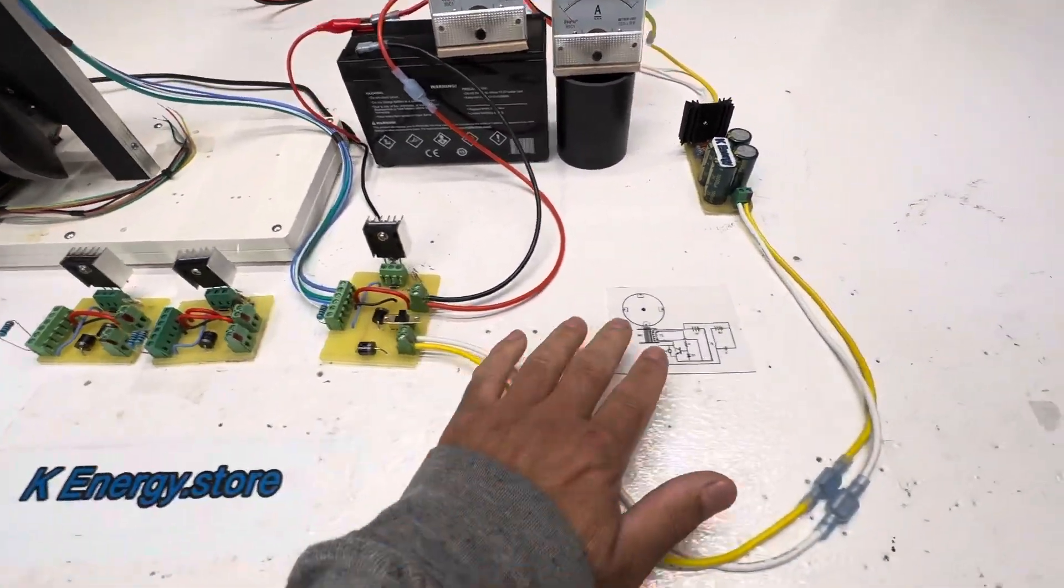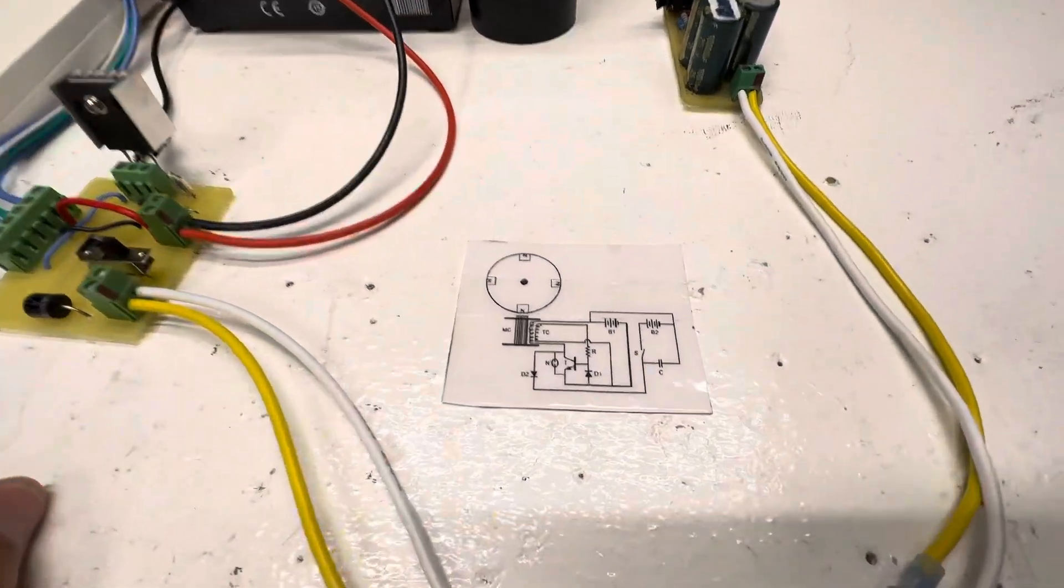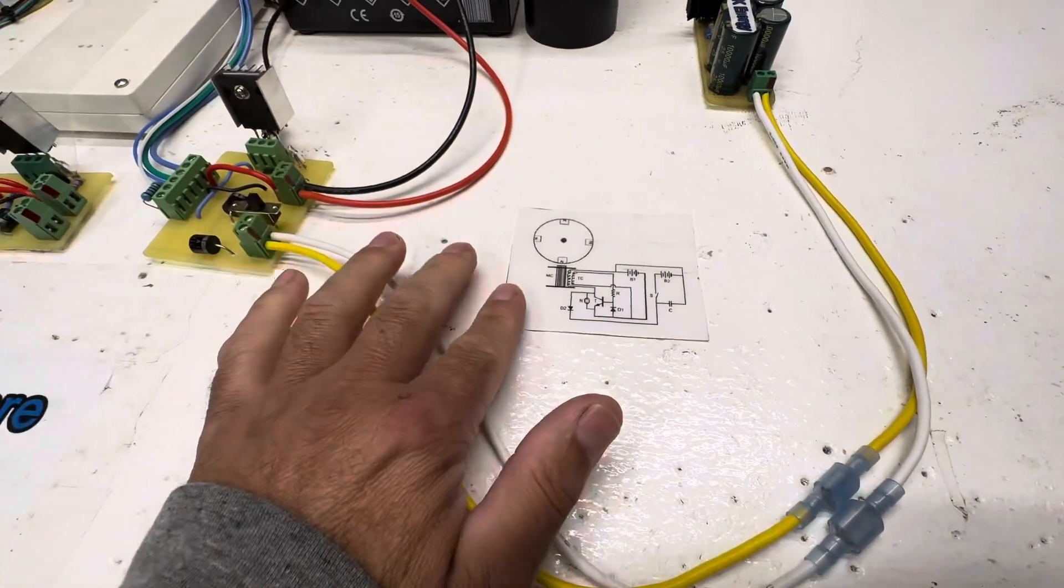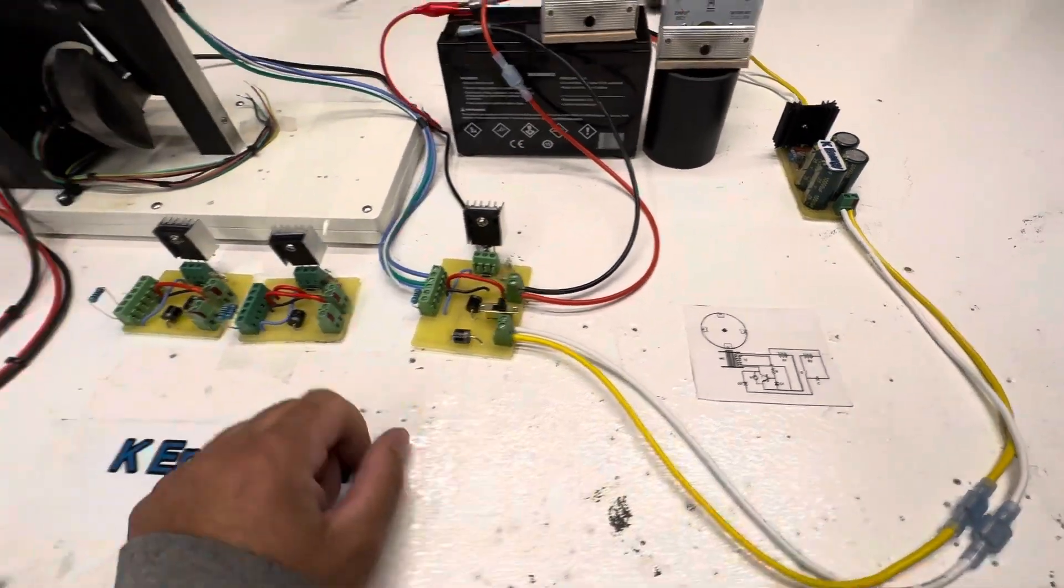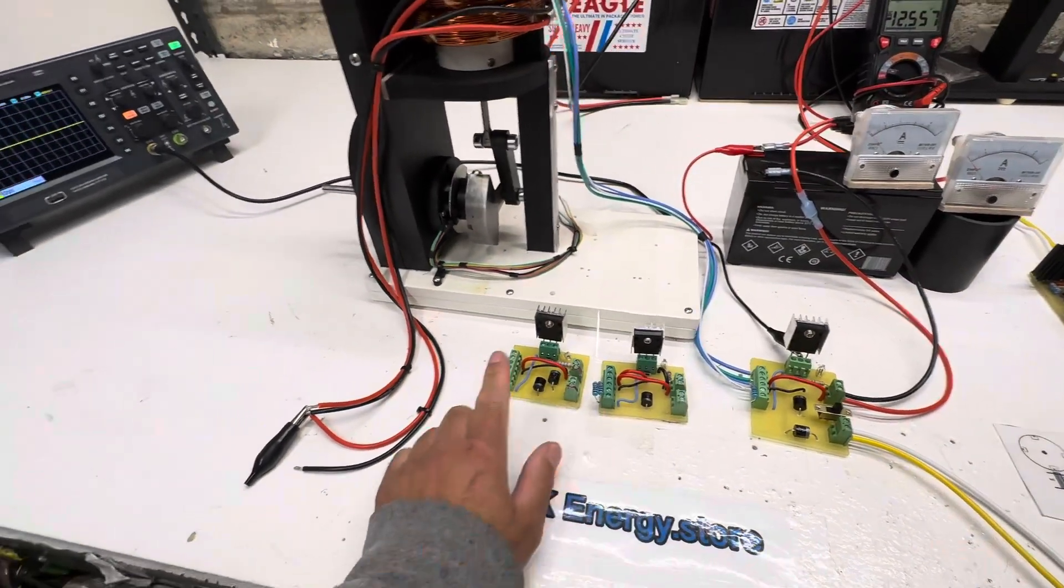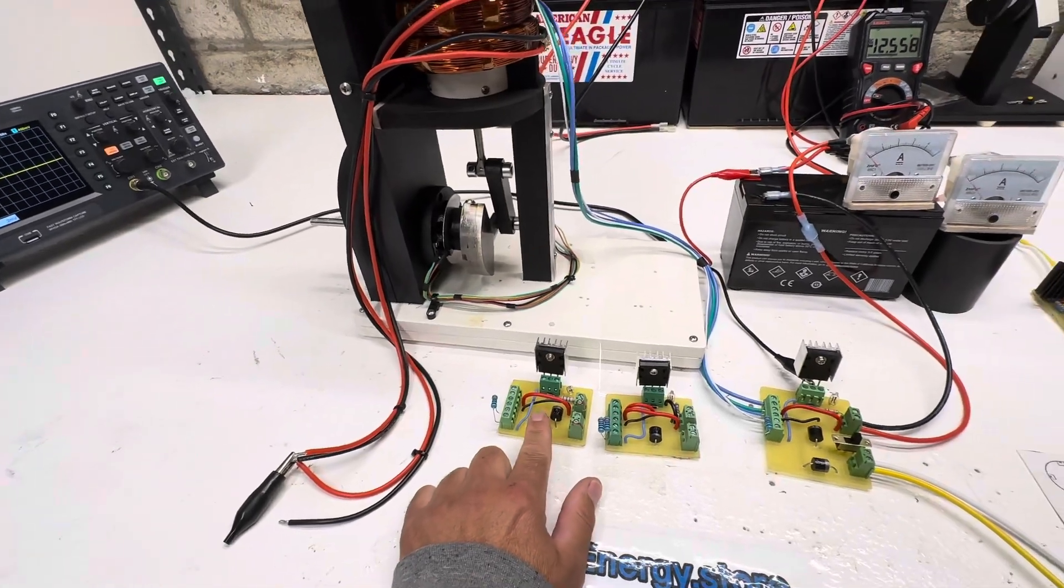For those of you that aren't familiar, this is the John Badini circuit. This is just the basic schoolgirl circuit, and then this is the generator mode circuit.